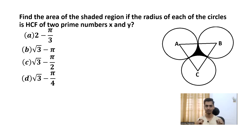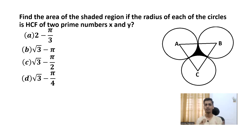Let's see how many of you could solve this problem on your own — put your answers in the comment section. If you don't know how to solve it, I will show you how to solve it in less than two minutes. Find the area of the shaded region if the radius of each of the circles is the HCF of two prime numbers x and y.